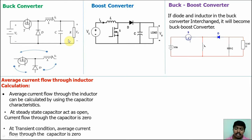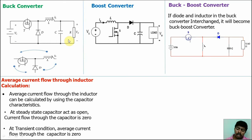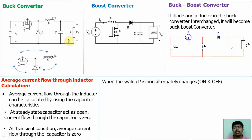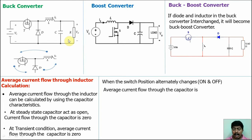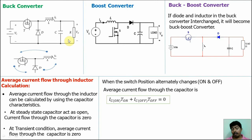When we change the switch position alternatively between on and off conditions, the average current flow through the capacitor will be zero. The average current flow through the capacitor when the switch alternates from on to off and off to on satisfies: Ic_on × T_on + Ic_off × T_off = 0. That equation is called the ampere-second balance equation.